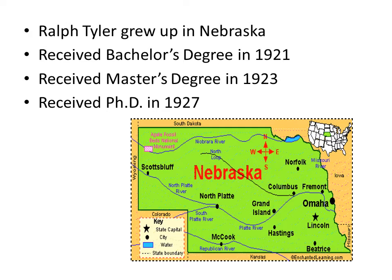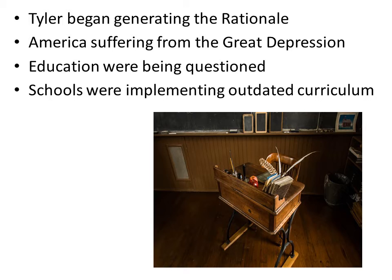His father was raised on a farm and then became a doctor. As Tyler grew up, he went to college and received his bachelor's degree in 1921 from Doyne College in Crete, Nebraska. He later received his master's degree from the University of Nebraska in 1923, and his doctorate from the University of Chicago in 1927. In his doctoral research, he emphasized the use of statistics in testing.